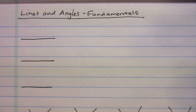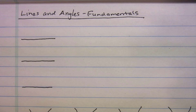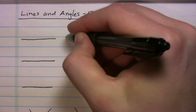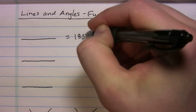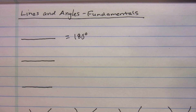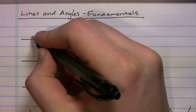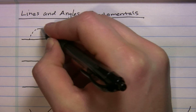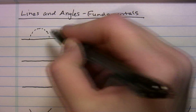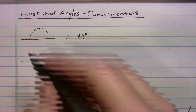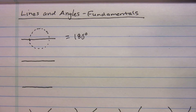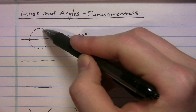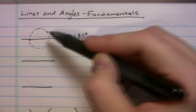First thing you should know: how many degrees are in a line? That's 180 degrees. You can think of a line as being half of a circle — the other half goes the other way. A circle is 360°, so a line has 180 of those degrees.